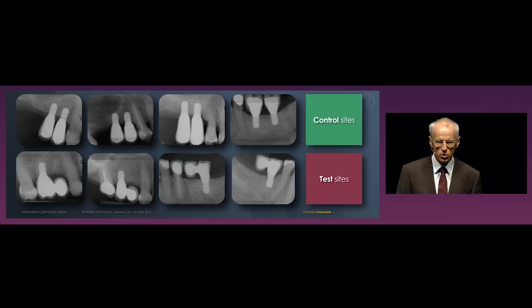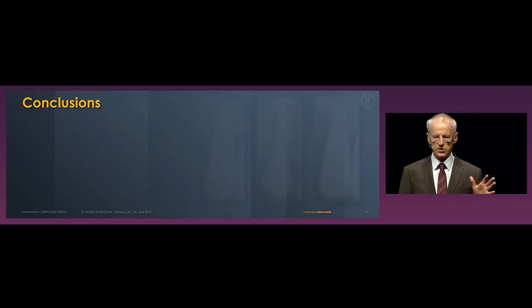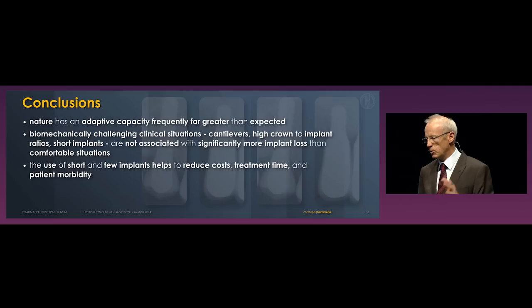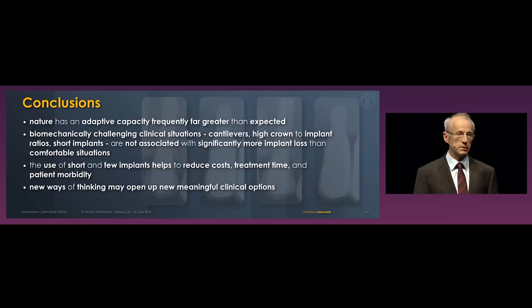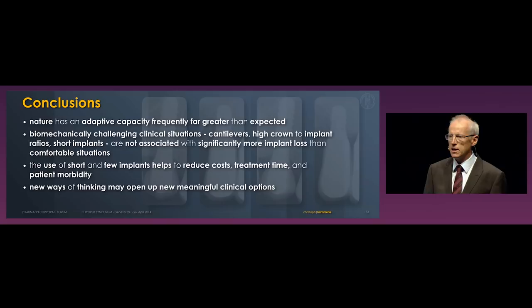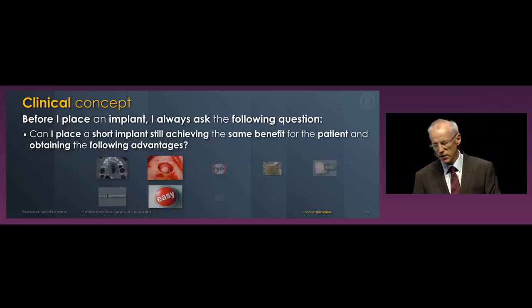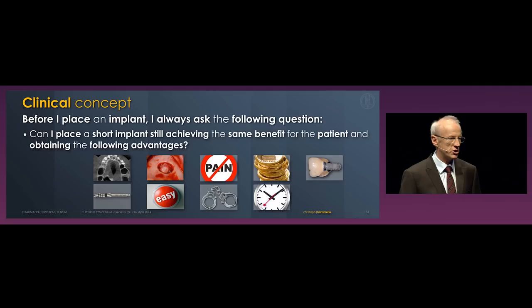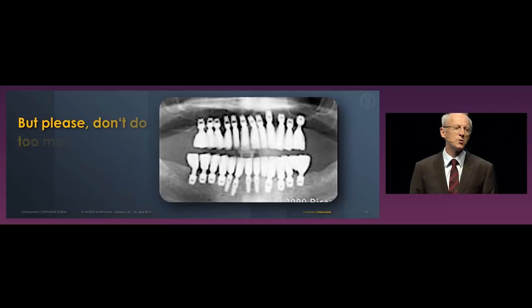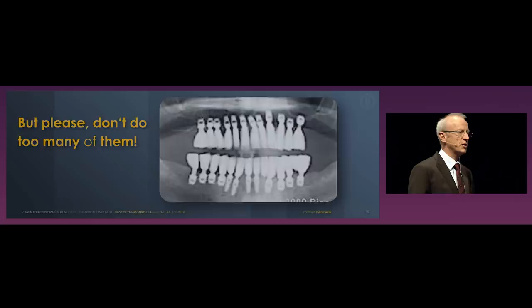Conclusions: Nature has an adaptive capacity frequently far greater than we expect. Biomechanically challenging situations — cantilevers, unfavorable crown-to-implant ratios, short implants — are not associated with significantly more implant loss than comfortable situations. The use of short and few implants helps to reduce costs, treatment time, and patient morbidity. New ways of thinking may open up new meaningful possibilities — let's not be framed in the same type of thinking forever. My clinical concept: before I place an implant, I always ask myself, can I place a short implant while still achieving the same benefit for the patient? But please, don't do too many of them. Thank you very much.